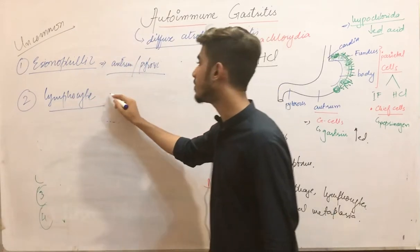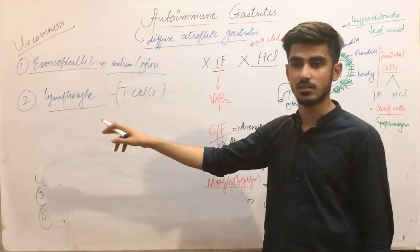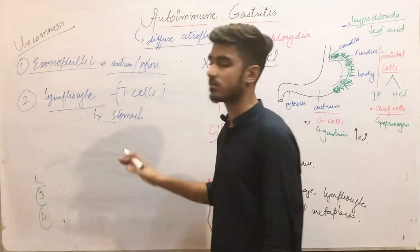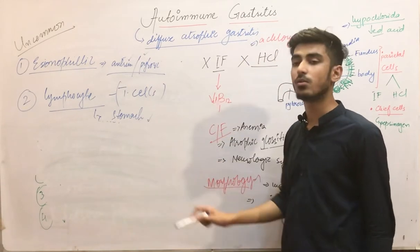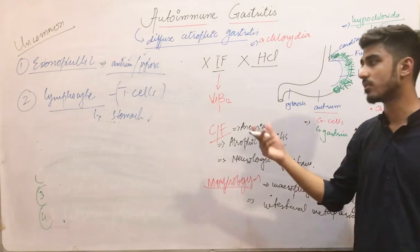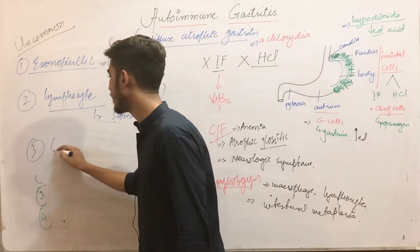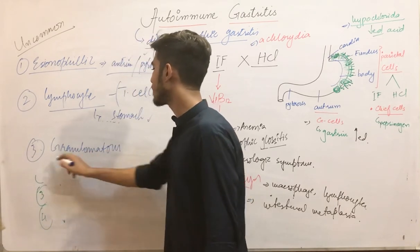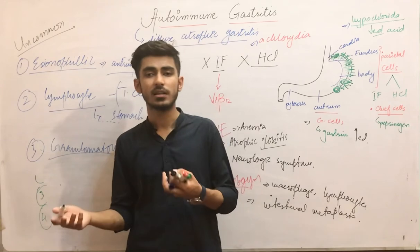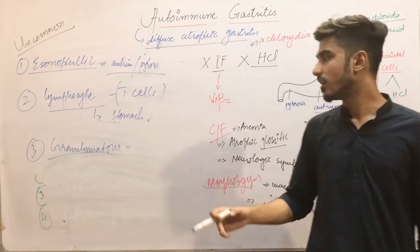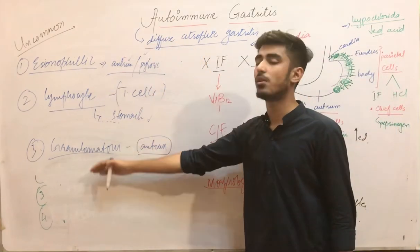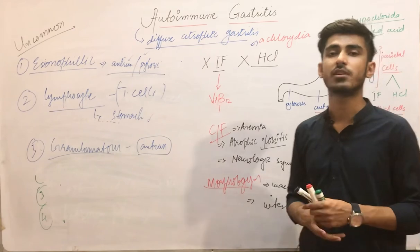The second uncommon form is lymphocytic gastritis — T lymphocytes are involved. It can involve any part or the whole stomach. Endoscopically, you can see small nodules with central depression. The third form is granulomatous gastritis, in which granulomas develop. It is mostly idiopathic but is commonly associated with Crohn's disease, and it affects the antral region of the stomach.